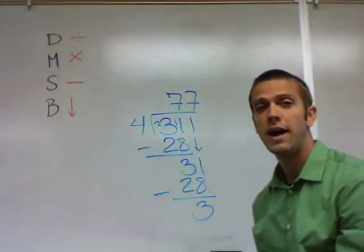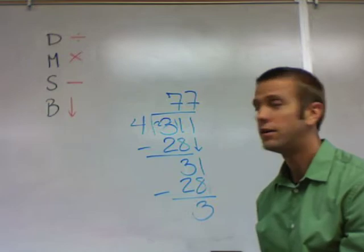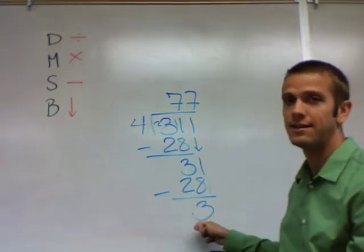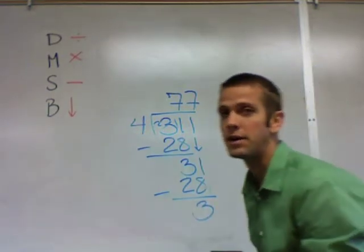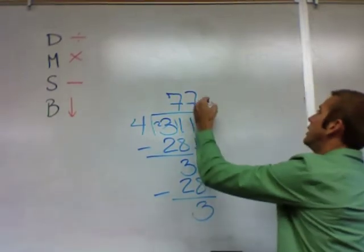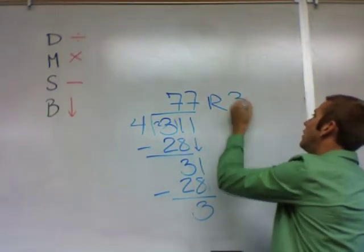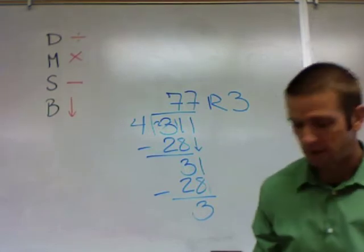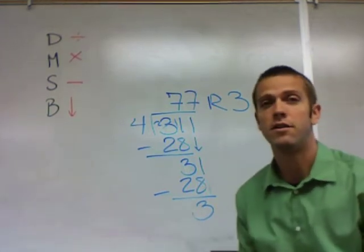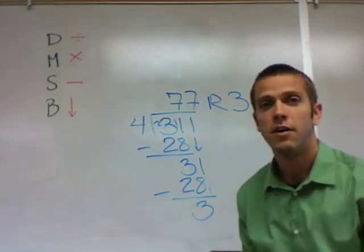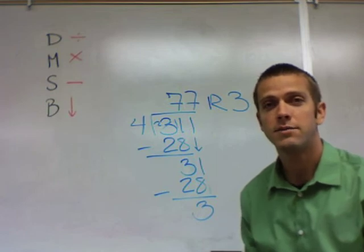Any time this number is less than the divisor, then you have a remainder. So our remainder is 3. Capital R, 3. So 77 remainder 3 would be your answer. I'm sure you're going to get a lot of practice with division. Let me know if you have any questions.